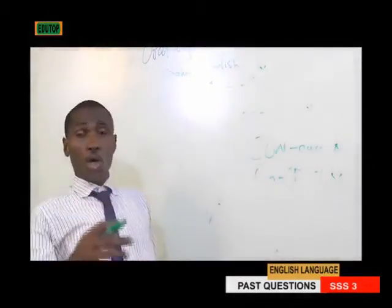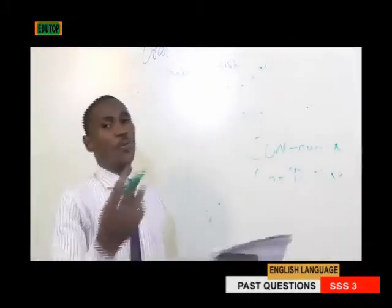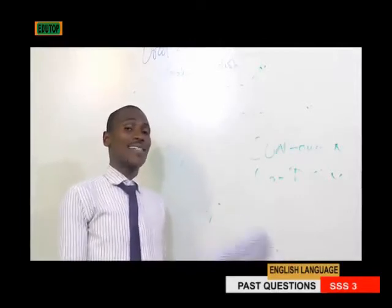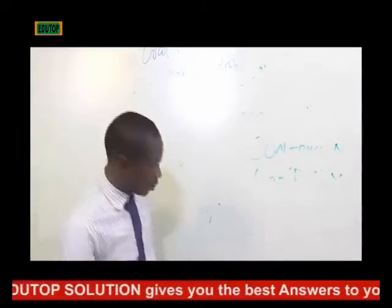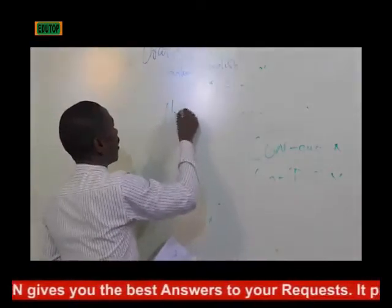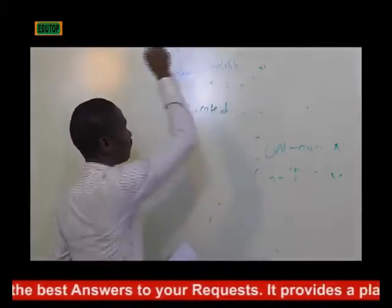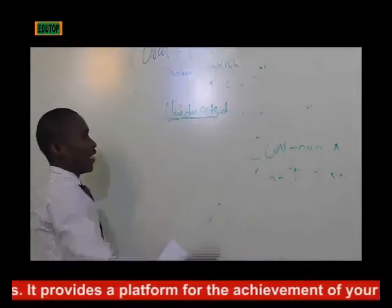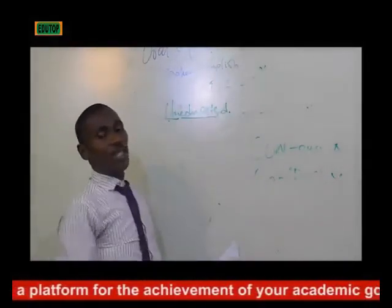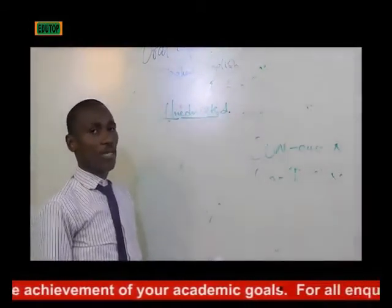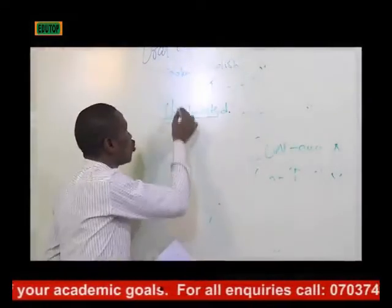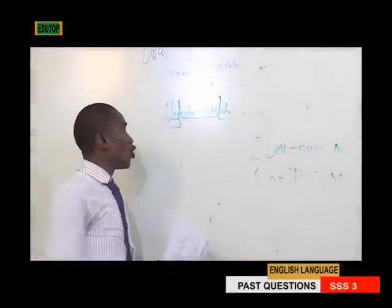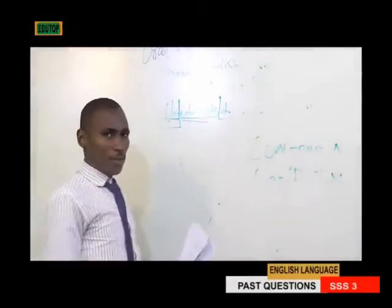The answer is quite simple. Rule one: you do not stress a suffix or a prefix. A prefix is whatever element you add in front of the root word. Take the word 'uneducated' — 'un-' is the prefix, 'educate' is the root word, and whatever is added behind is the suffix. So to stress a polysyllabic word, you do not have any business with the prefix or the suffix. You are only going to contend with the root word.